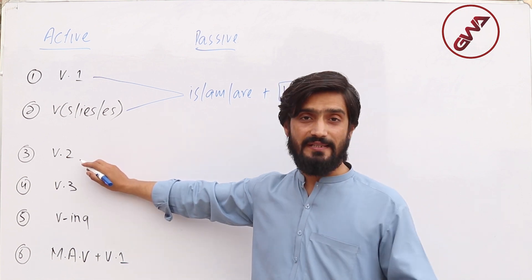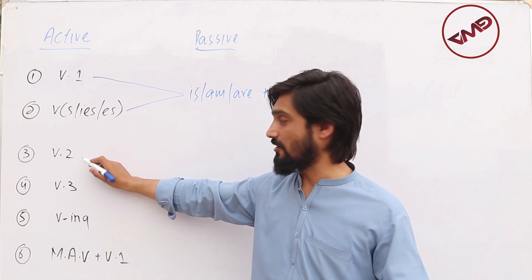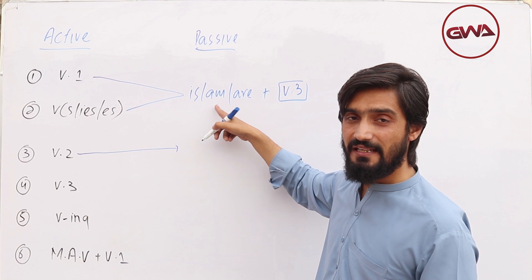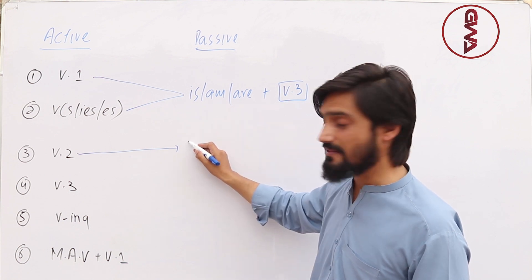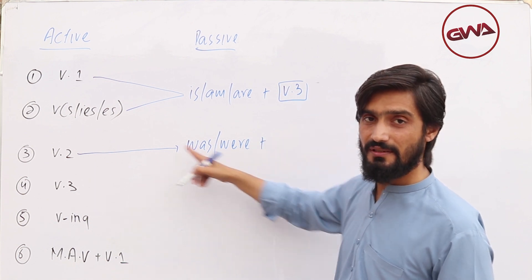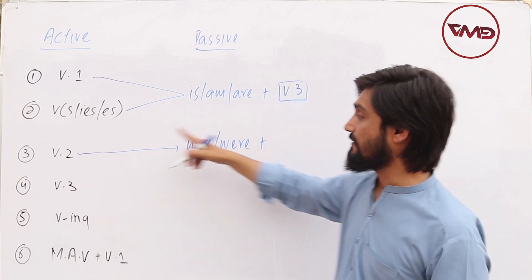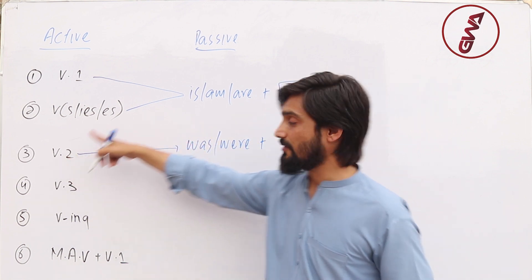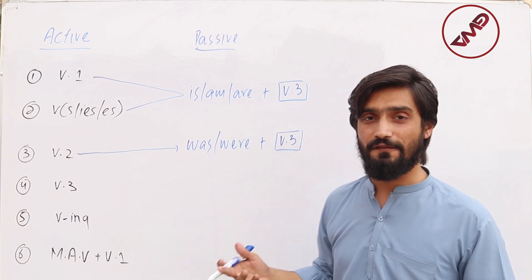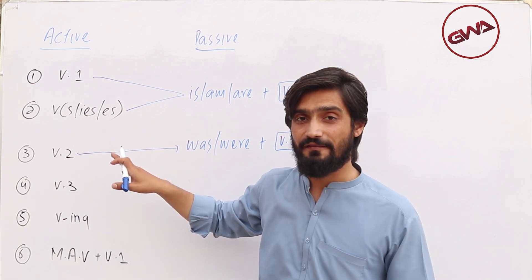The second form of the verb represents the simple past tense. To change simple past tense into passive voice, instead of is, am, are we use was or were, and the verb is converted to the third form, because in passive voice we always have the third form.